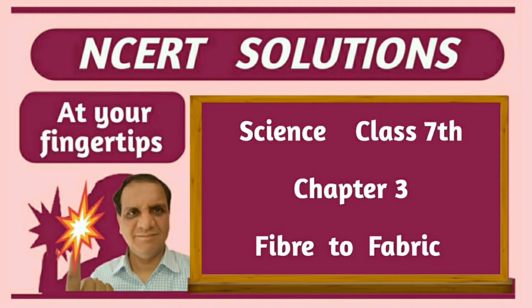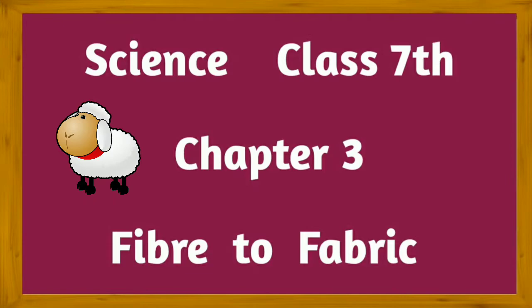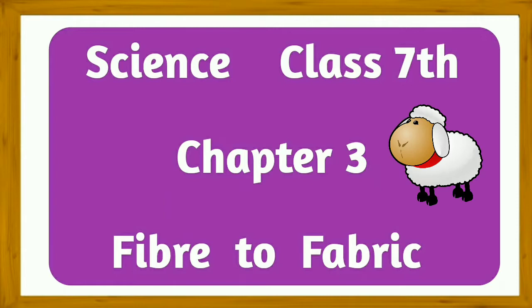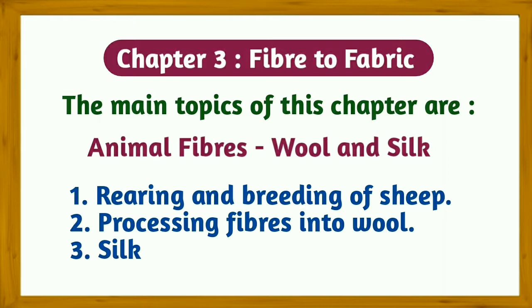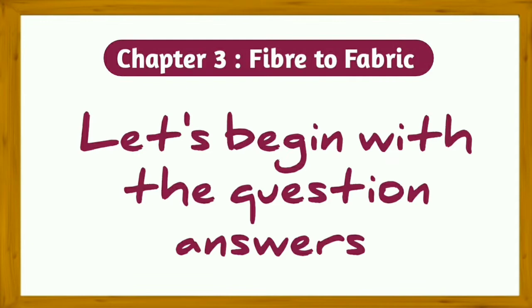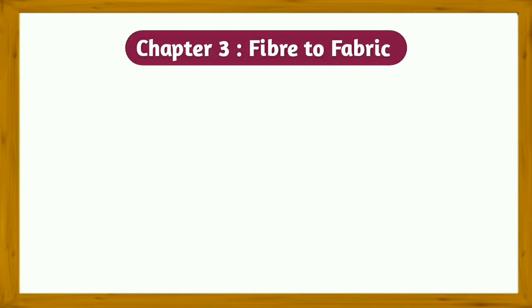Today we are going to do NCERT solutions for Class 7 Science Chapter 3: Fiber to Fabric. The main topics of this chapter are animal fibers, wool and silk, rearing and breeding of sheep, and processing fibers into wool and silk. Let's begin with the question answers.